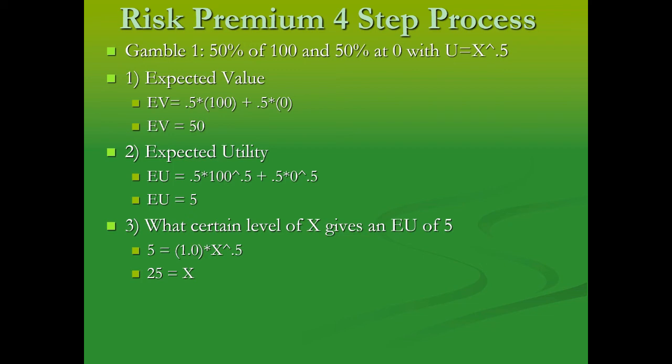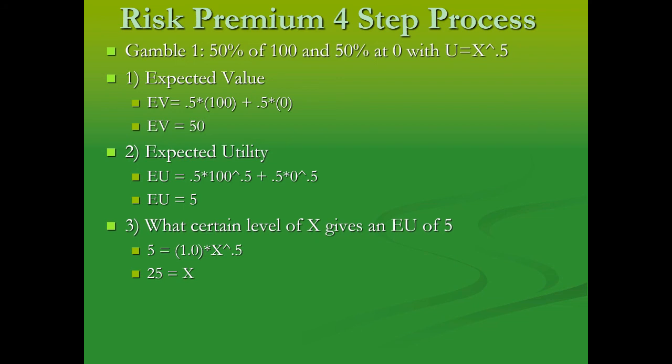In this calculation of risk premium, we've done everything covered up to this point: calculated the expected value, the expected utility, and the certainty equivalent. The last step for calculating the risk premium is step four: take the expected value and subtract the certainty equivalent.